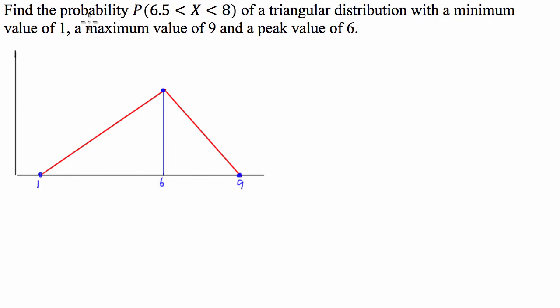And we're asked to find this probability distribution here. So first of all, we have to figure out what the peak value of this triangle distribution is. So because it's a probability distribution, we know the area under this triangle has to equal 1.